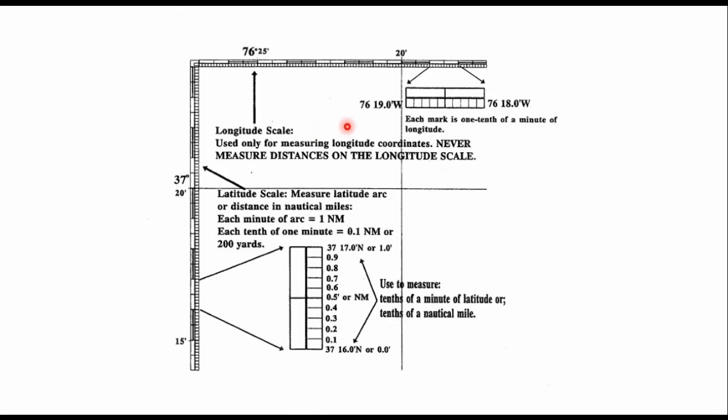If we look at the longitude scale, it's the same thing. We have 76 degrees 18.0 minutes west right here, and we have 76 degrees 19.0 minutes west right here. Same thing, that one-tenth of one minute is 0.1, 0.2, 0.3, 0.4, and here's 0.5, that long line. The reason why they have a darker nautical mile and then a lighter one is so you can differentiate. It makes it easier to plot.